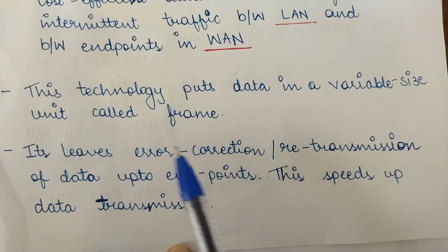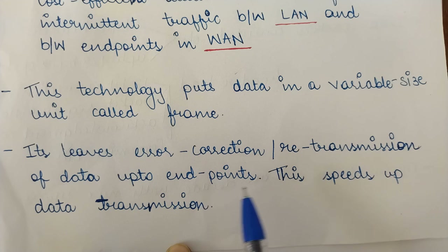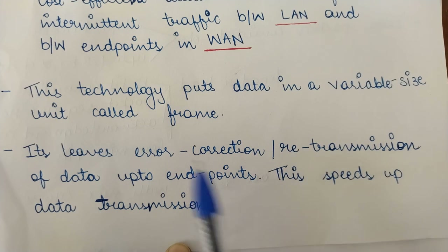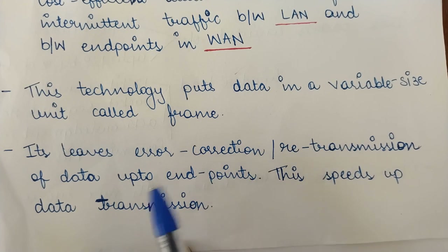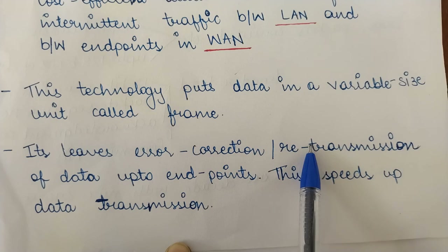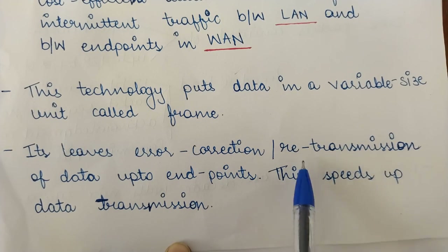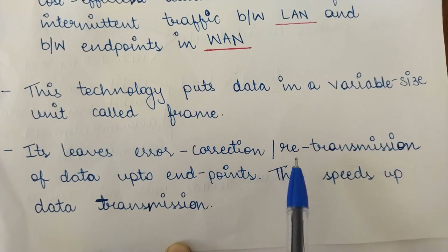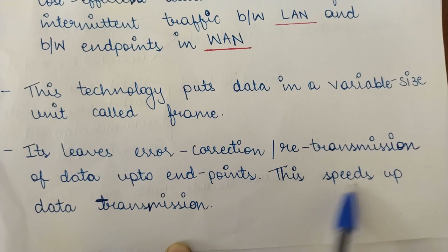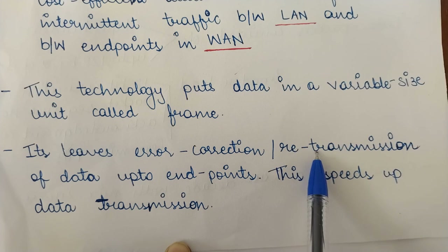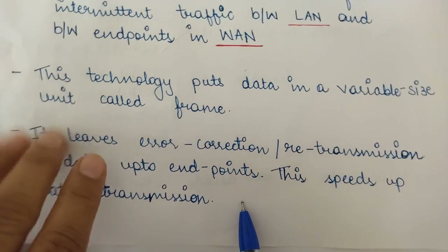Frame Relay is connection-oriented but does not provide error control or flow control. It leaves error correction and retransmission of data up to the end points. If an error is detected, the end terminal is responsible for correcting it and retransmitting the data packet. This speeds up data transmission because the time that would have been consumed for error correction and retransmission is saved.